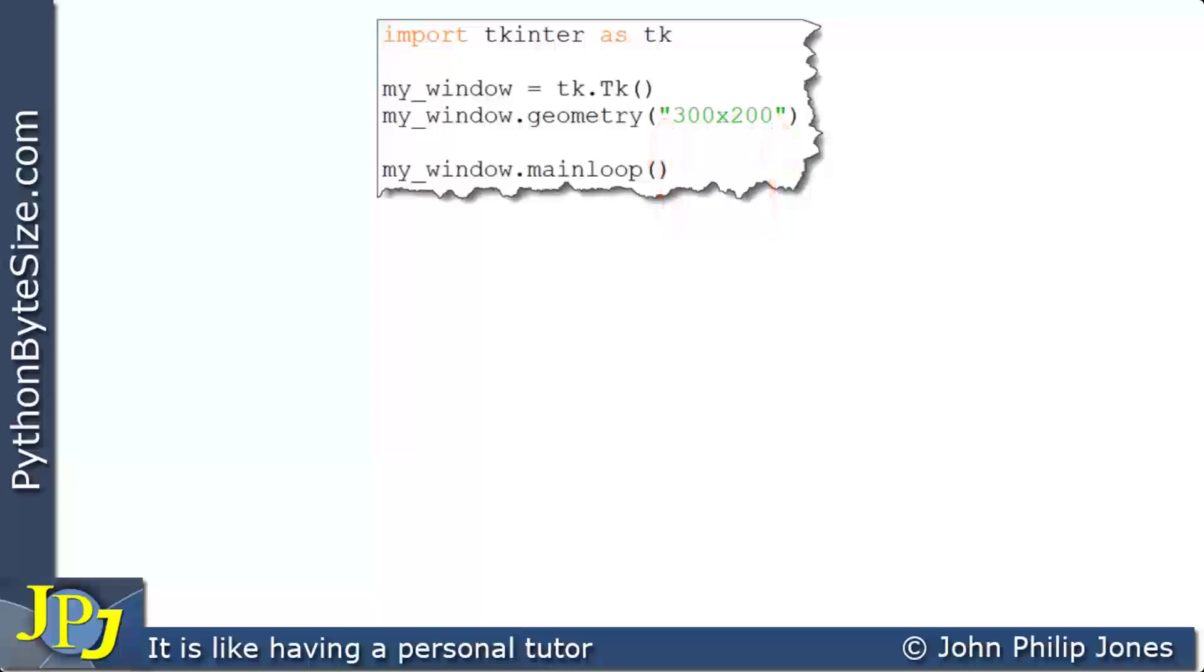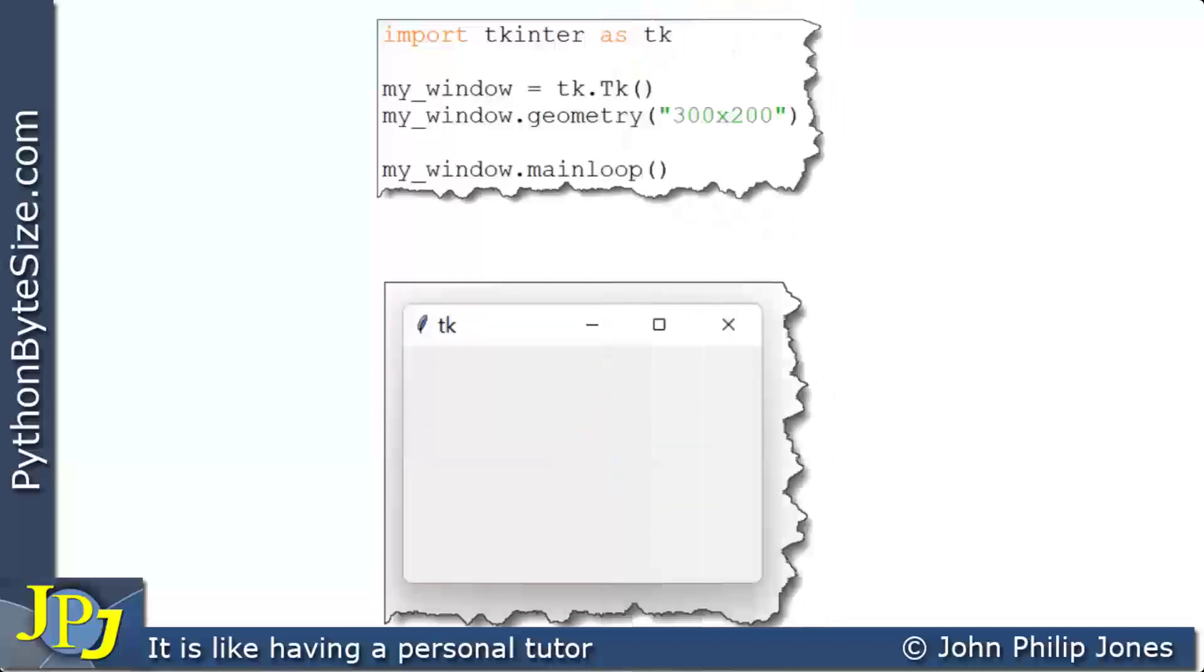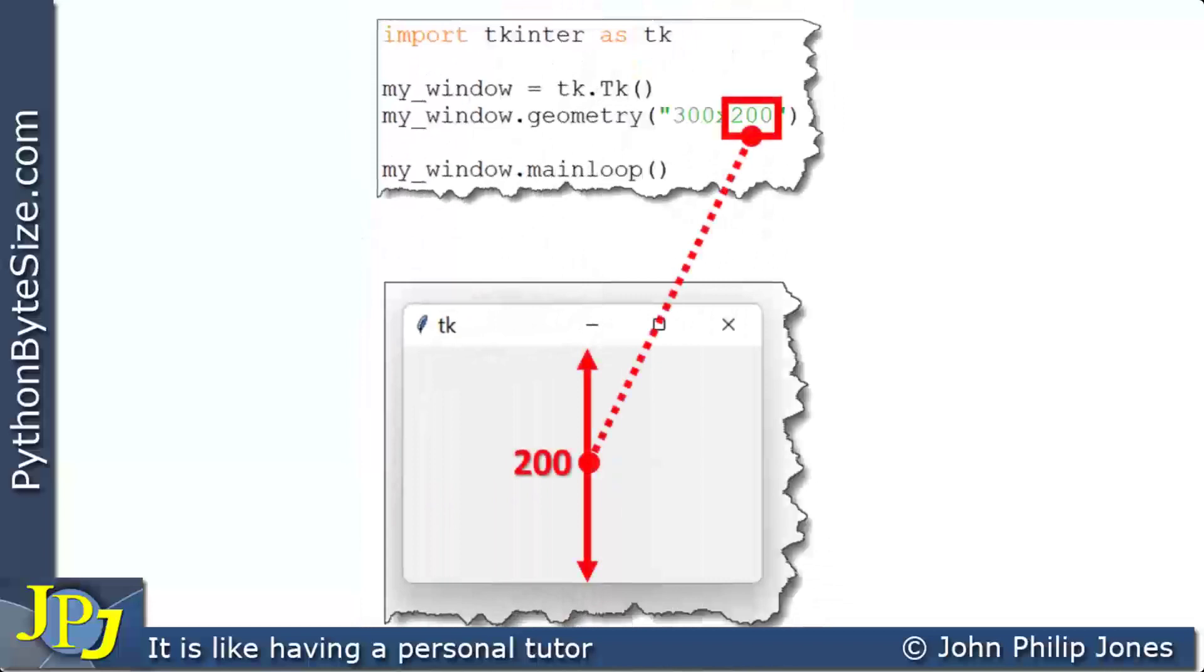Because of the argument, the window will appear as shown here, and we can see that the 300 has set the width of the window, and the 200 has set the height of the window. So we can see that invoking this method and passing in the argument sets the dimension for the TKinter window.